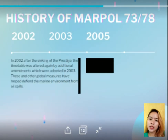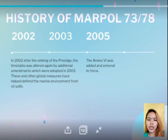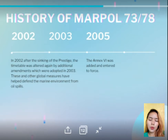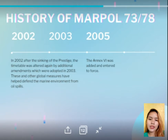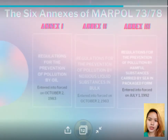In 2002, after the sinking of the Prestige, the timetable was altered again by additional amendments which were adopted in 2003. These and other global measures have helped defend the marine environment from oil spills. Lastly, in 2005, Annex 6 was added and entered into force.